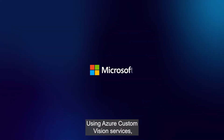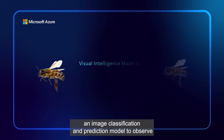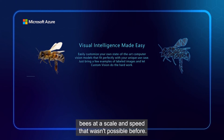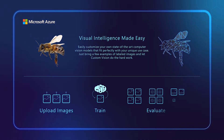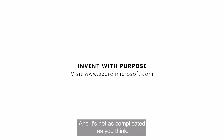Using Azure Custom Vision Services, we can create an image classification and prediction model to observe bees at a scale and speed that wasn't possible before. And it's not as complicated as you think.